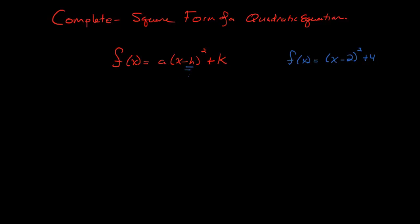So we have x minus 2 squared plus 4. So notice here that our negative h was equal to a value of negative 2. And then we had our value of positive k, and that was equal to a value of positive 4.